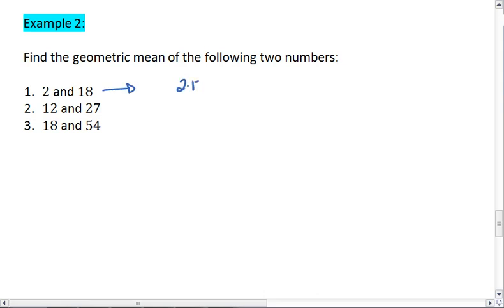For 2 and 18, we multiply 2 times 18. We get 36. Take the square root of 36, we get 6. Thus, the geometric mean of 2 and 18 is 6.